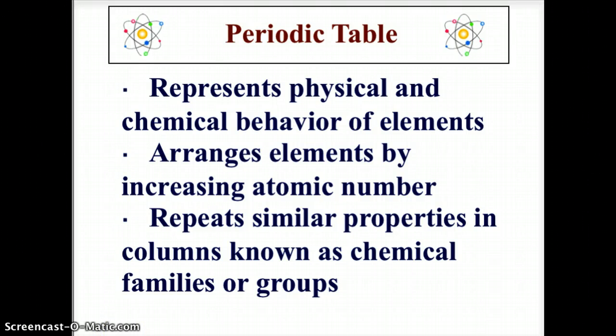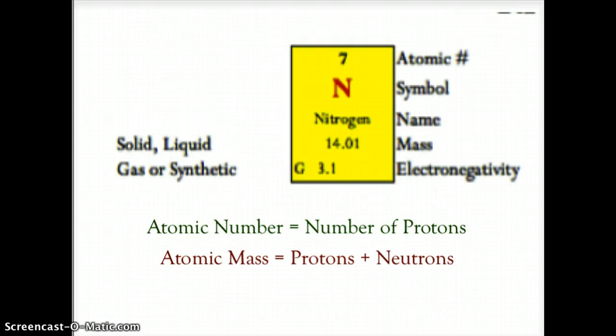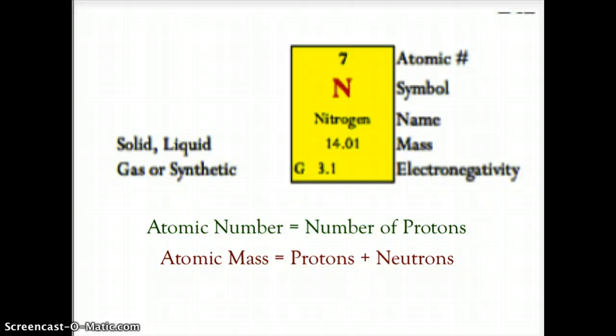Let's look at how our periodic table is arranged. First, there is a key in the center upper region showing what an element box looks like. The number on top tells you the atomic number — again, that is the number of protons.